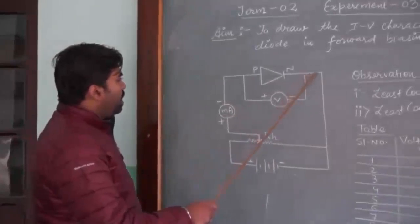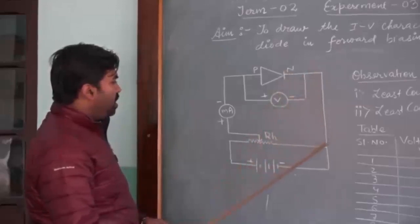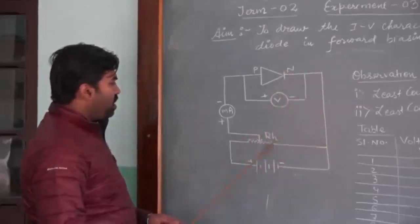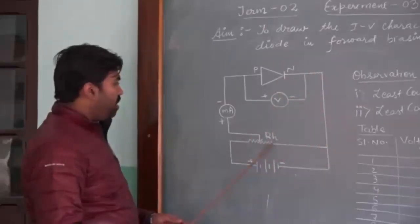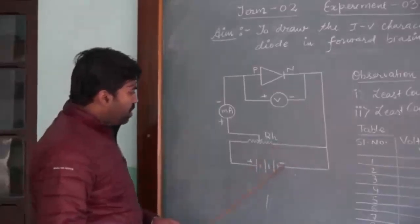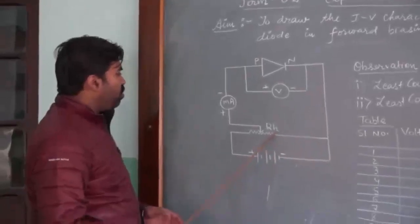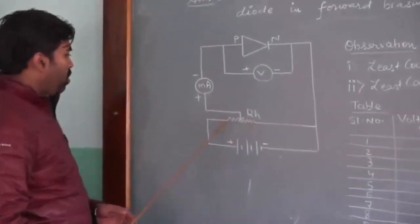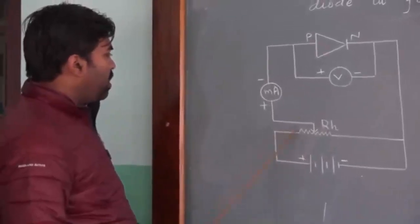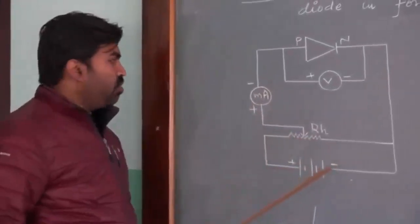From the negative side, the N-type is connected to the second terminal end of the rheostat, and the negative terminal of the battery is also connected to the same point of the rheostat. The positive terminal of the battery is then connected to the first side of the rheostat.